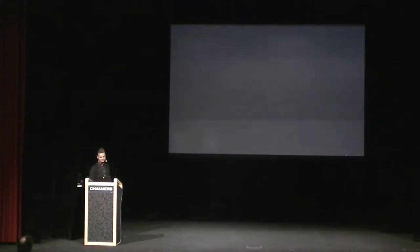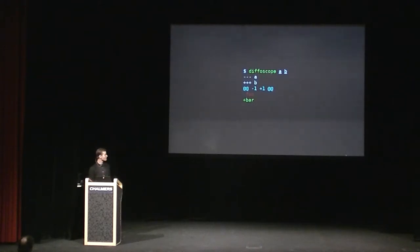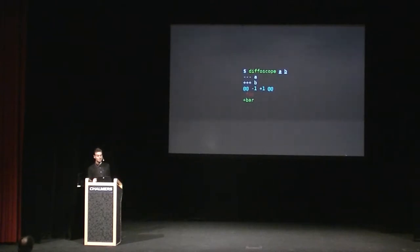Build a better diff. So we did, and we call it Diffoscope. To run through some quick examples: you give it two files and it tells you the difference between them. It defaults to unified diff. A file called A contains the word foo, a file called B contains the word bar — you run Diffoscope on them and it shows you the diff, colored by default, with a progress bar.